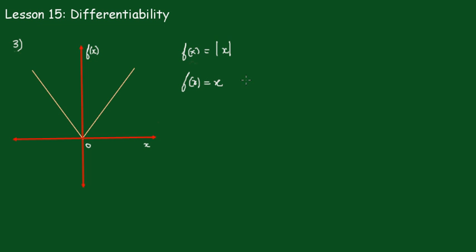f(x) is equal to x if x is greater than naught. So in other words, f'(x) is equal to one for the value of x which is greater than naught. So all along here the gradient is equal to one.